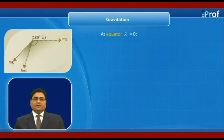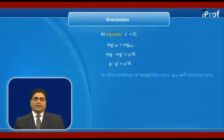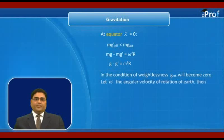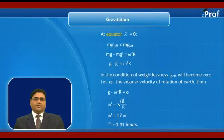But at equator, since lambda equals 0, m g_effective equals m g − m omega² R. In the special condition where g_effective equals zero, the time period of earth's rotation T' would equal 1.41 hours.